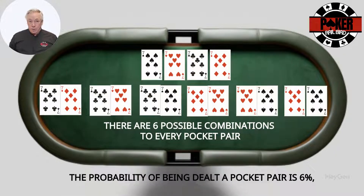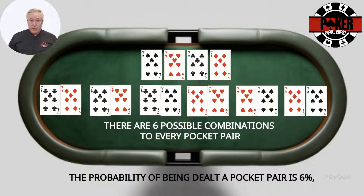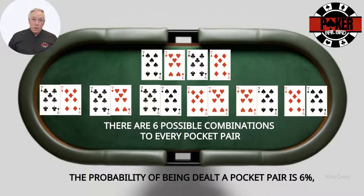Pocket pairs work a bit differently. You have 6 possible combinations of cards of the same rank to make a pocket pair. The probability of being dealt any random pocket pair is 6%, or once every 16 hands. The probability of being dealt any specific pocket pair, such as pocket 7s, is 0.45%, or once every 221 hands.